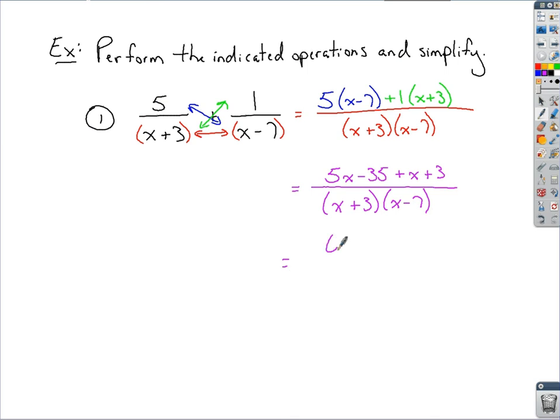We've got 5x plus x, so 6x. We've got negative 35 plus 3, so that's negative 32 over our factored form down here.